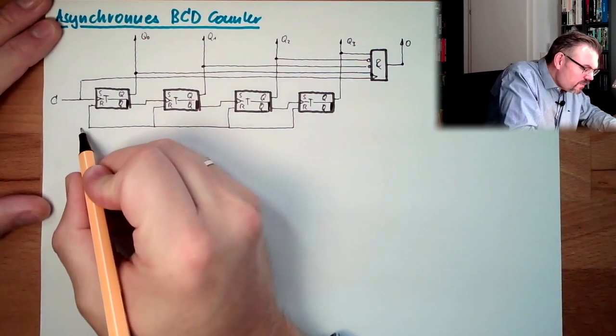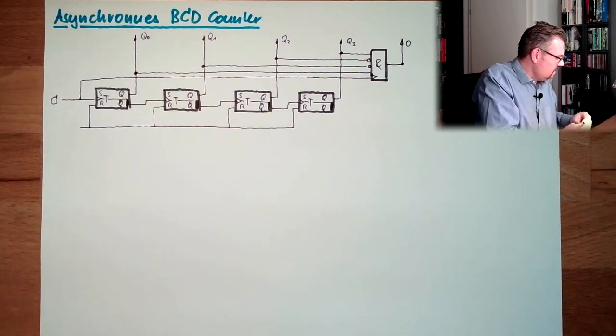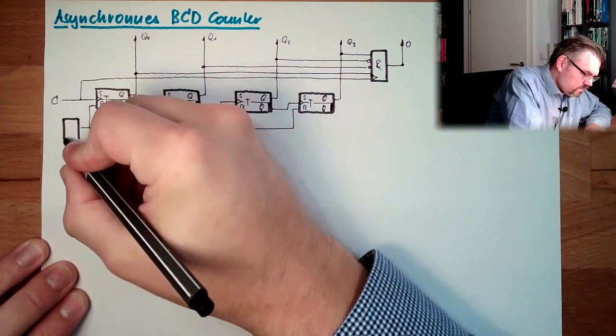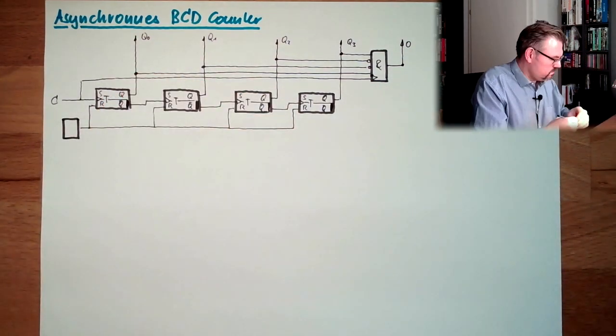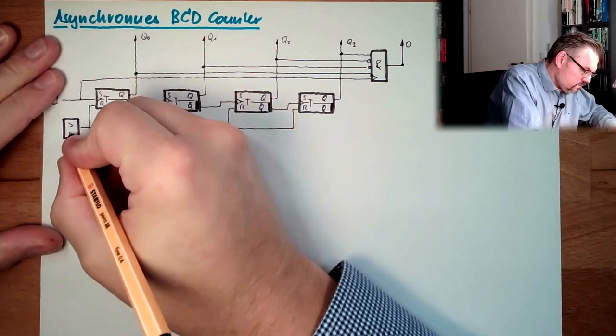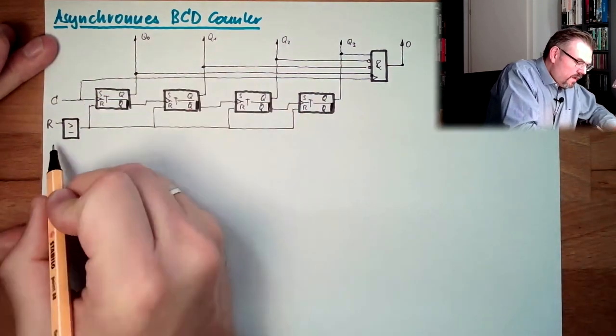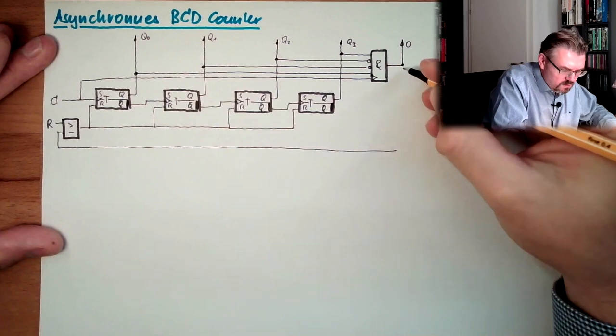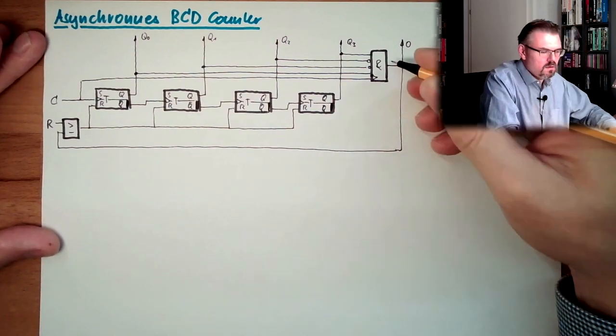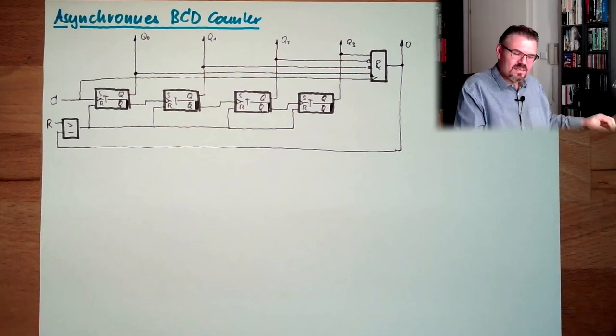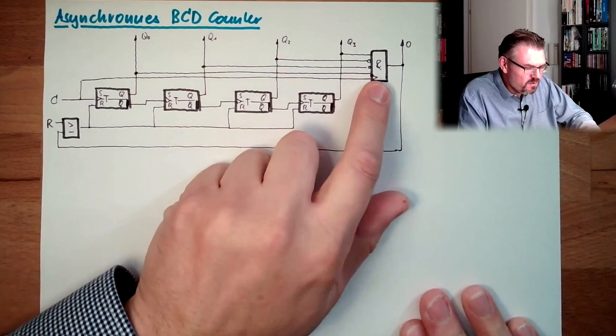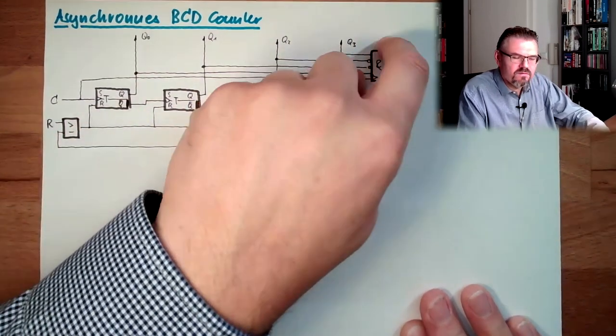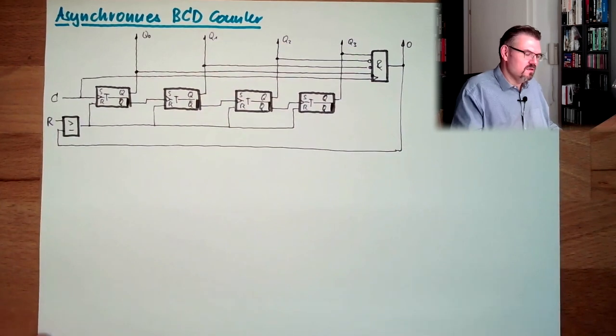And what else must happen? I also have to add here an additional element, an OR. One side comes from R, and the other side I will simply connect here to this AND. And that's it. This will reset at exactly the correct time when we're at nine. We'll reset my count to the zero and give the signal to the next digit.